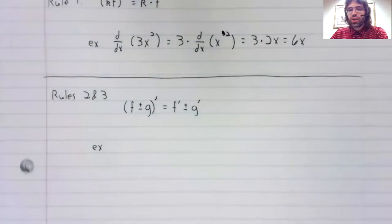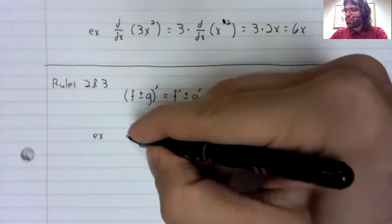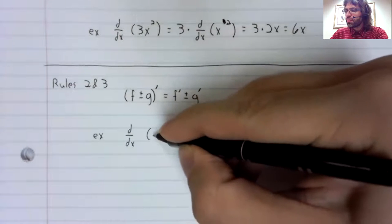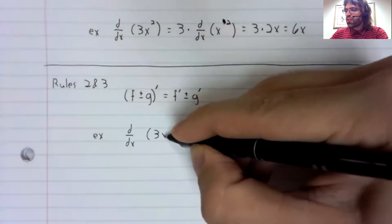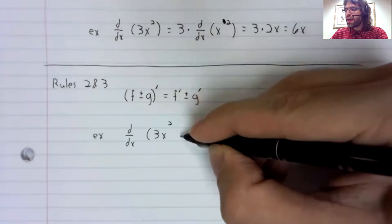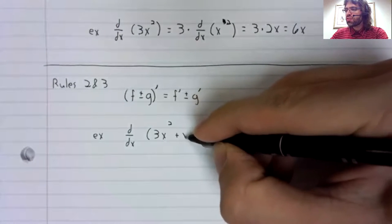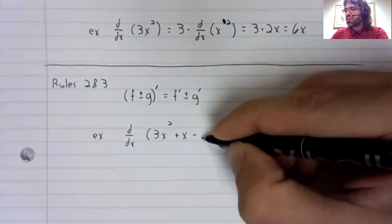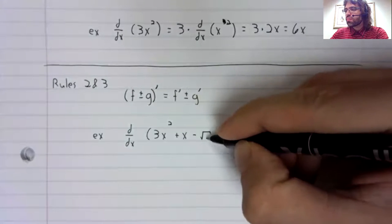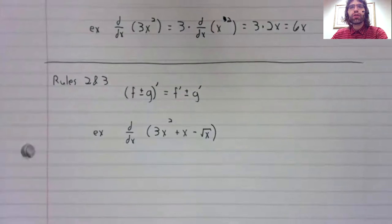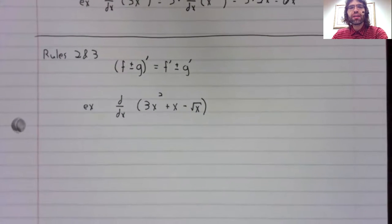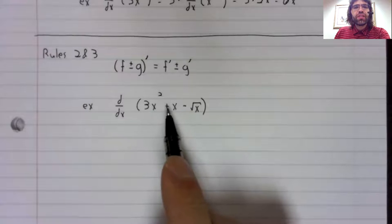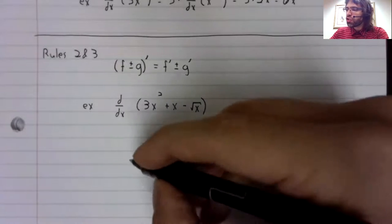For example, the derivative of 3x² plus x minus the square root of x. What this rule says is that if we have addition and subtraction, we can break the derivative apart in the natural way.